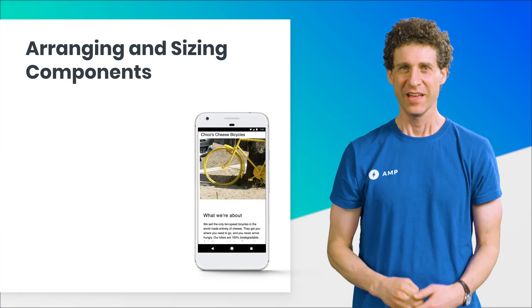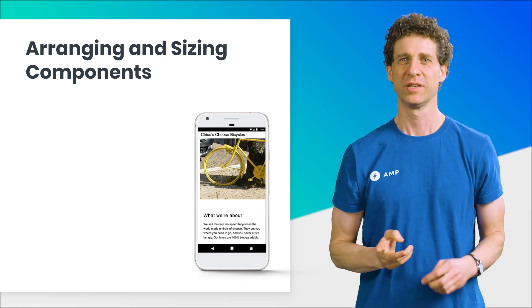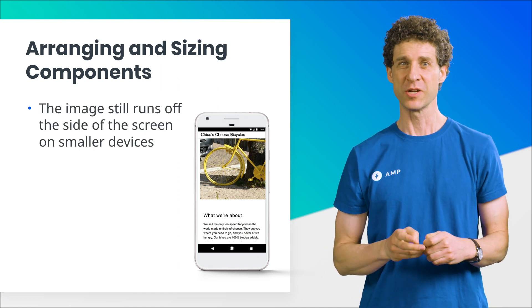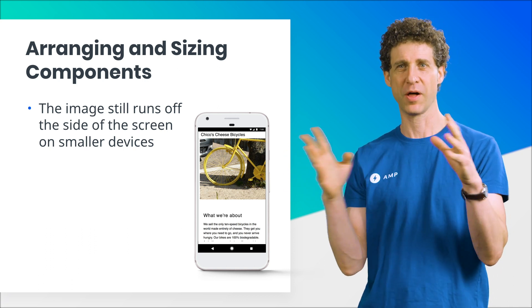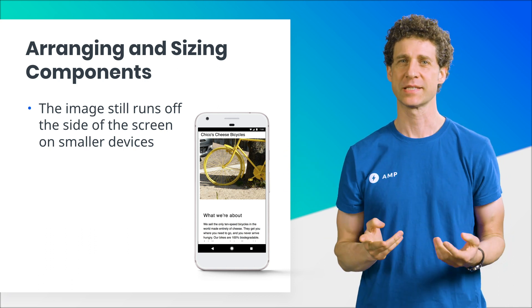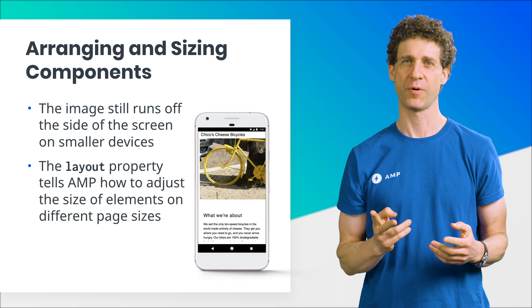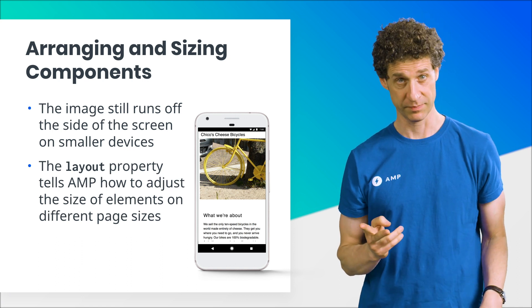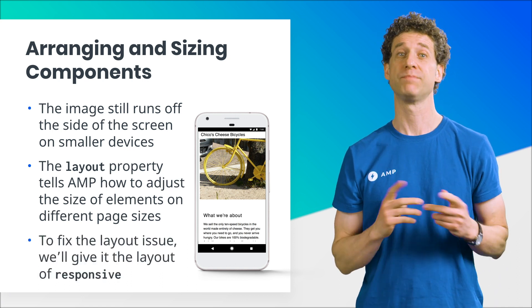Our web page looks great on bigger screens, but if you check your site on a mobile device or on your browser's mobile device simulator, you'll see that the image runs off the side of the screen on these smaller devices. To fix this, we'll use the layout property that's supported by most AMP components, including AMPImage. We'll set this property to responsive.